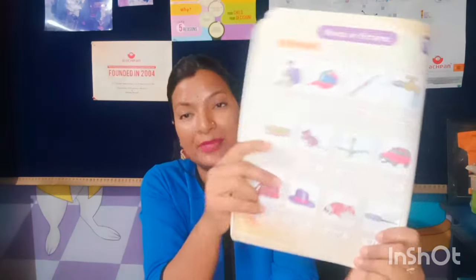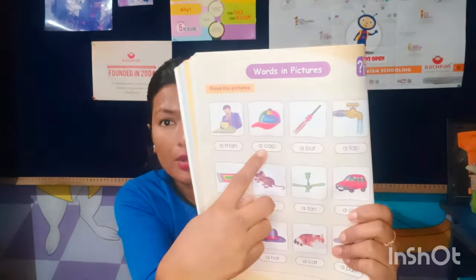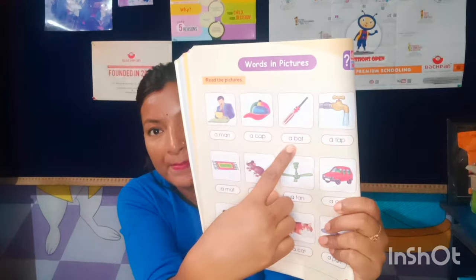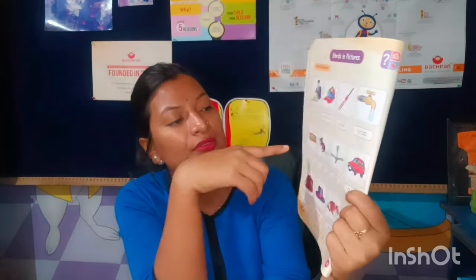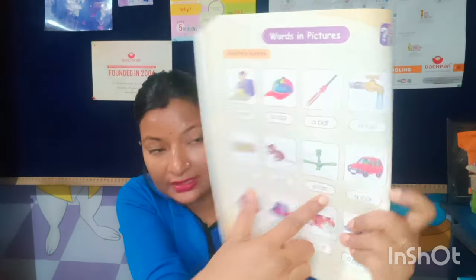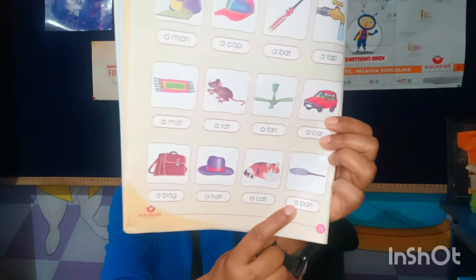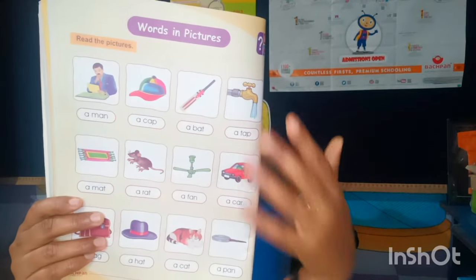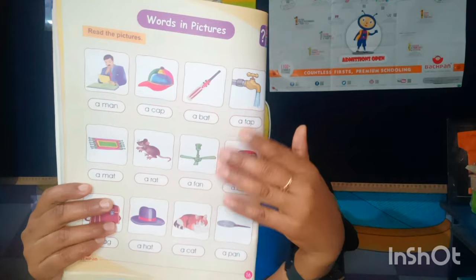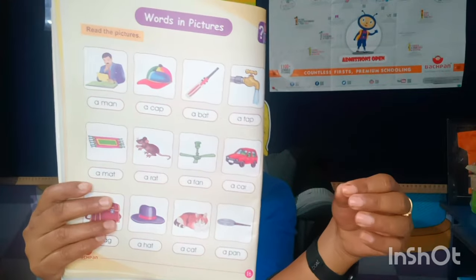The next topic is 'words in pictures.' Here we read A-sound words shown in pictures: man, cap, bat, tap, mat, rat, fan, car, bag, hat, cat, and pan. These are for practicing all A-sound blending words. You have to read them two or three more times, write more such words, and do reading practice.